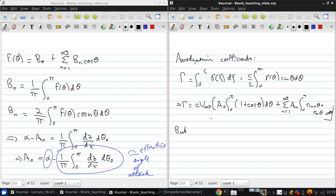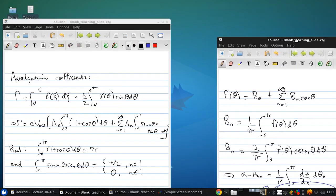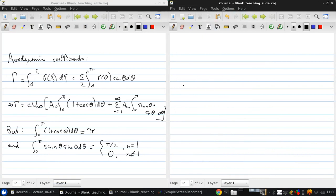And this looks awful. But the integral from 0 to pi of 1 plus cos theta d theta is just pi. And the integral of 0 to pi of sin n theta sin theta d theta only has two possible values: pi over 2 if n equals 1 and 0 otherwise. And that means we can dramatically simplify this expression and instead write that the circulation is c v infinity pi a0 plus pi over 2 a1. No more infinite series.